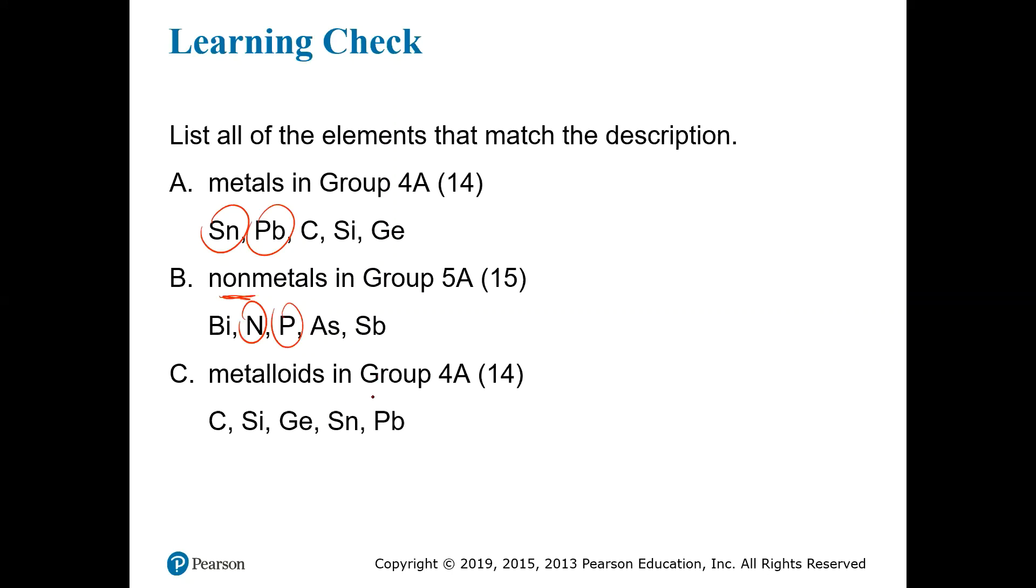Last but not least, the metalloids in group 4A or 14. This is the same group we were looking at in question one. We saw that carbon is a non-metal, tin and lead are metals, and so that leaves silicon and germanium as the metalloids in group 4A.